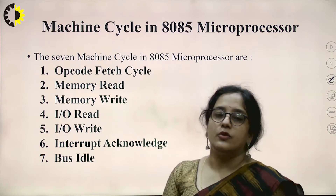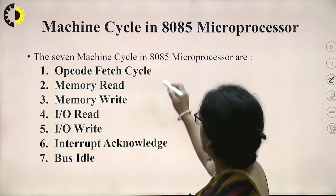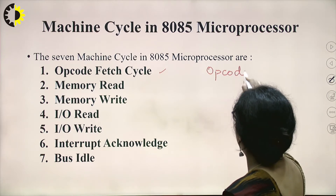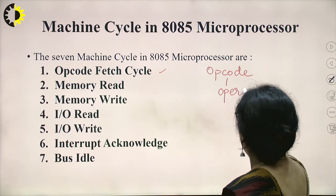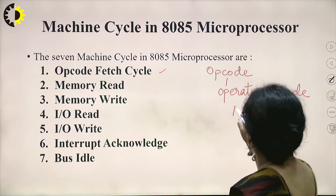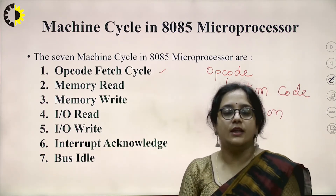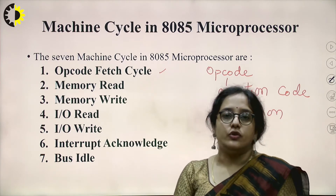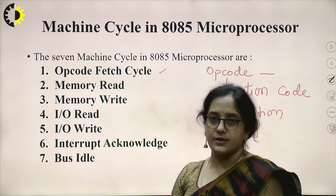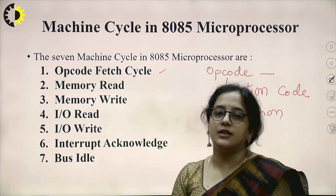There are seven machine operations performed by the 8085 microprocessor. The first one is opcode fetch. Opcode means operation code — which operation is the microprocessor going to perform? For each operation we have one opcode. This operation code is fetched by the microprocessor and depending on that opcode the further machine cycle will be performed. Each instruction consists of an opcode and an operand.